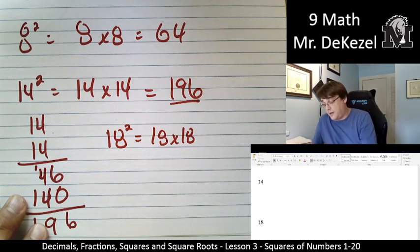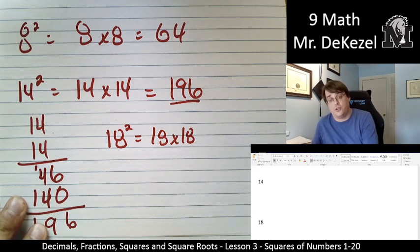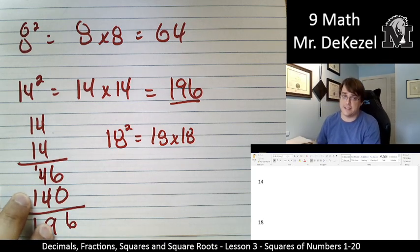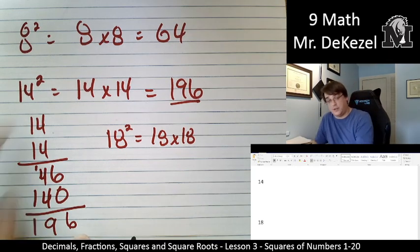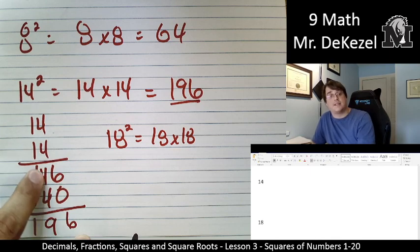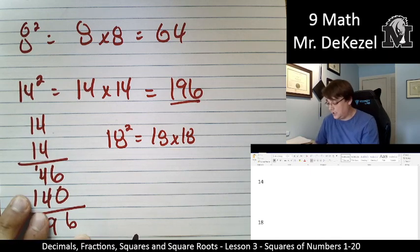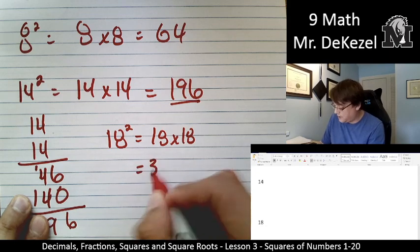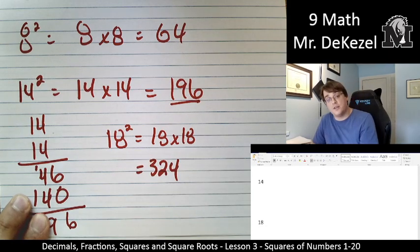You can put them on top of each other. I encourage you to pause the video and go ahead and give that a go if you're not sure right away what 18 times 18 is. Do the method that we just did right here, except do 18 times 18. But 18 times 18 is 324.